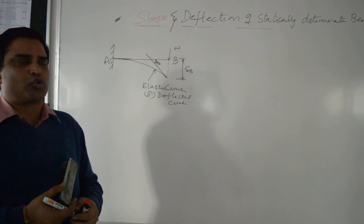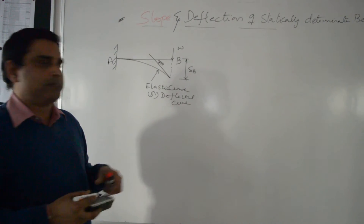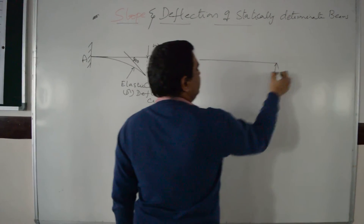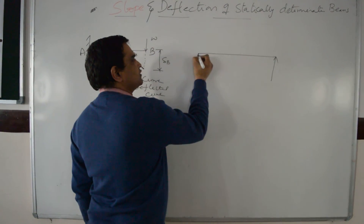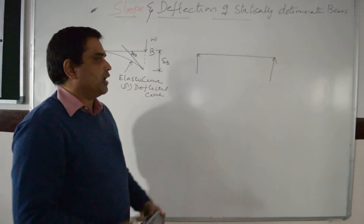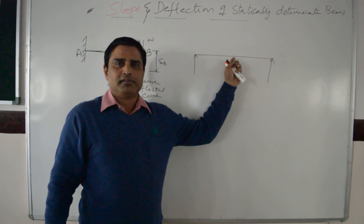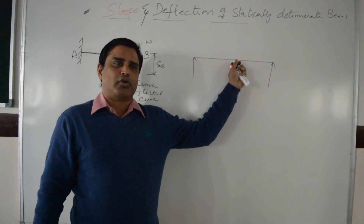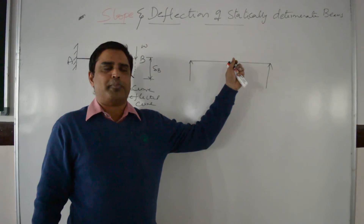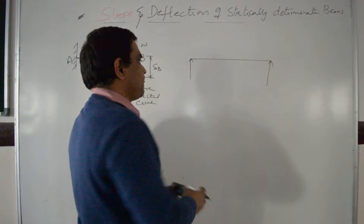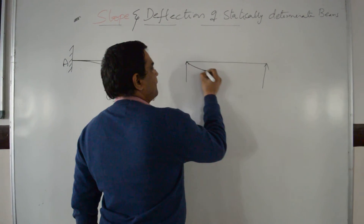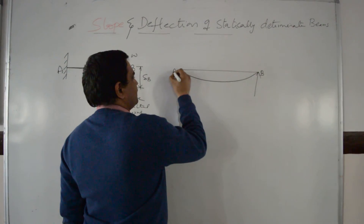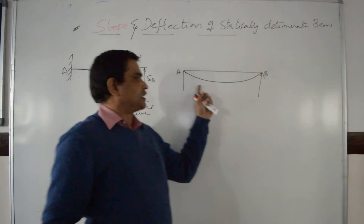Now we discuss the shape of slope and deflection for a simply supported beam. A simply supported beam rests on two supports. Initially the beam is free from loading and therefore straight. After load is applied, the simply supported beam bends in a circular arc shape, which is the deflected shape of the beam.